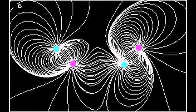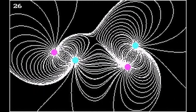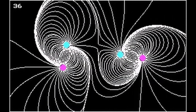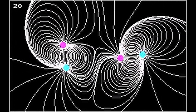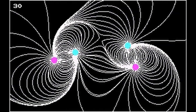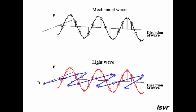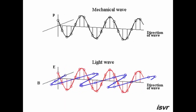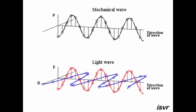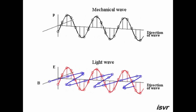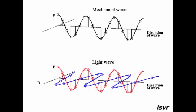The electromagnetic interaction is also responsible for the behavior of charged particles in magnetic fields. When a charged particle moves through a magnetic field, it experiences a force perpendicular to both its velocity and the direction of the magnetic field. This is known as the Lorentz force and is responsible for phenomena such as the deflection of charged particles in particle accelerators. In addition, the electromagnetic interaction plays a crucial role in the weak and strong nuclear forces, the other two fundamental interactions in particle physics.